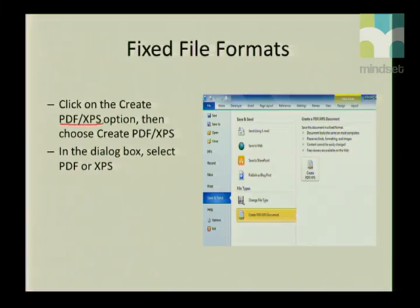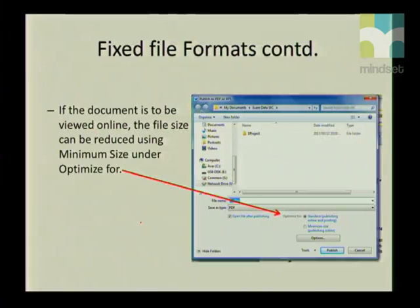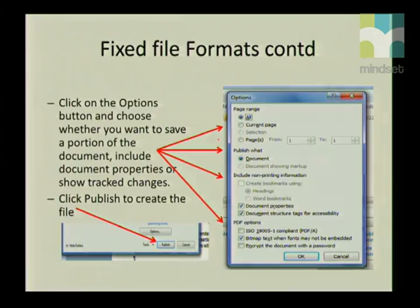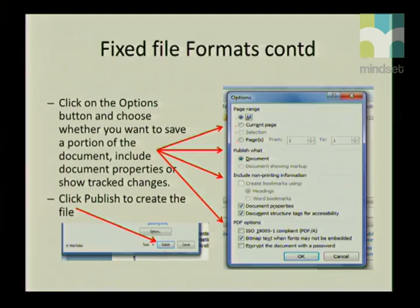Click on Create PDF or XPS Document when you save it. You also have an option to minimize the file size, especially useful if you're going to print it online. You don't have to publish your whole document — you can choose the whole document, a current page, a highlighted section, or a specific page range such as pages two to four. Once you've made your selection, click OK and then Publish.